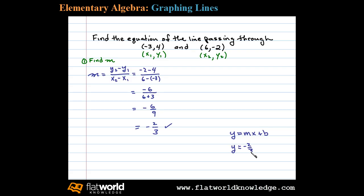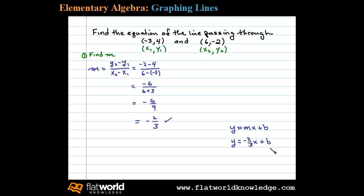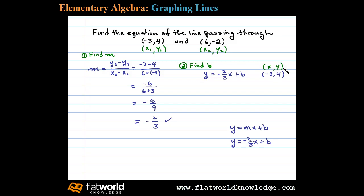We can substitute that in: y equals negative 2 thirds x plus B. Now all that's left is to find B. We can do that by substituting in any one of the given ordered pair solutions and solving for B. I'm going to use the point negative 3, 4 — so x is negative 3 when y is 4.